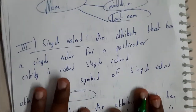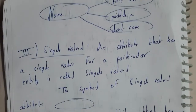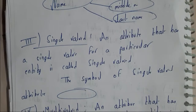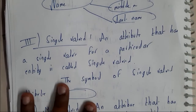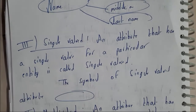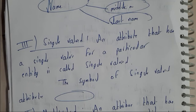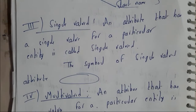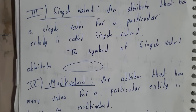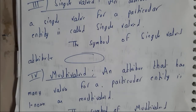A single-valued attribute is an attribute that has a single value for a particular entry. It is going to hold only one value.